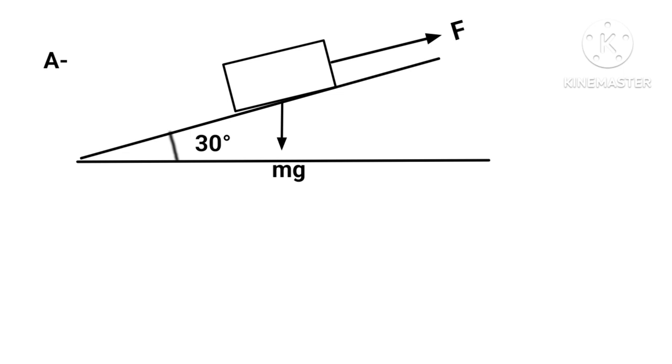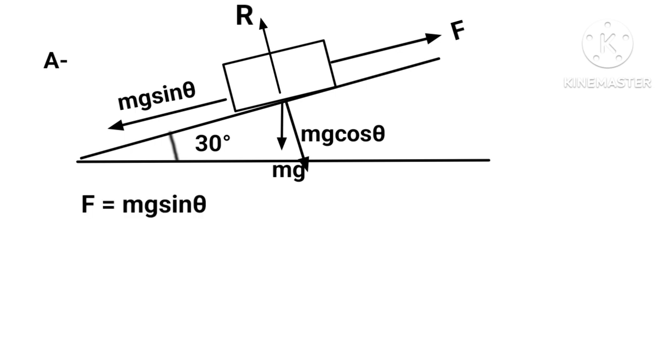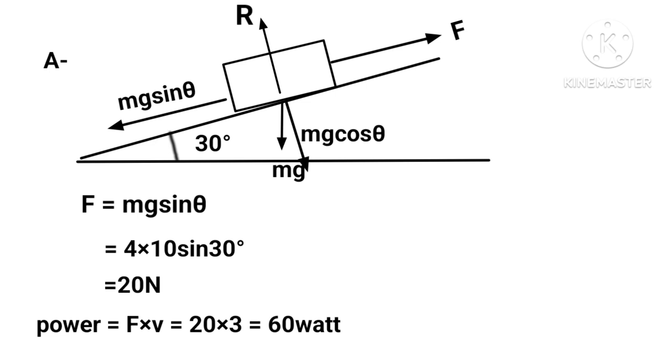Components of mg are mg cos θ and mg sin θ. Along the plane, in equilibrium, F = mg sin θ = 4 × 10 × sin 30° = 20 N. Hence, power = F × v = 20 × 3 = 60 watts.